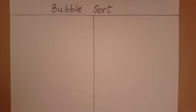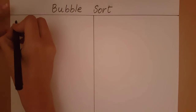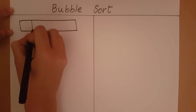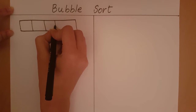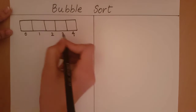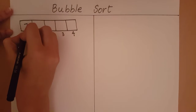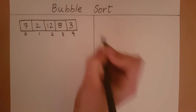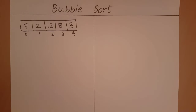Bubble sort is an algorithm used to sort an array of elements. Let's see how the bubble sort algorithm works with an example. This is my array and these are the indexes. As you can see, the elements in the array are not sorted. We want to sort this array in ascending order.